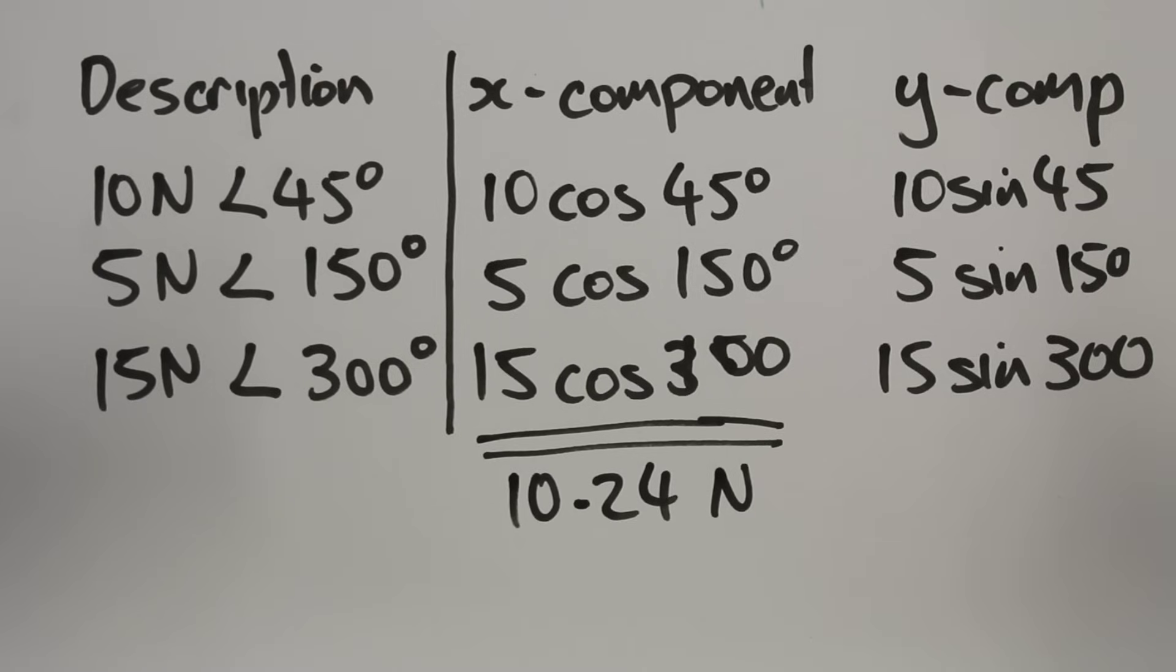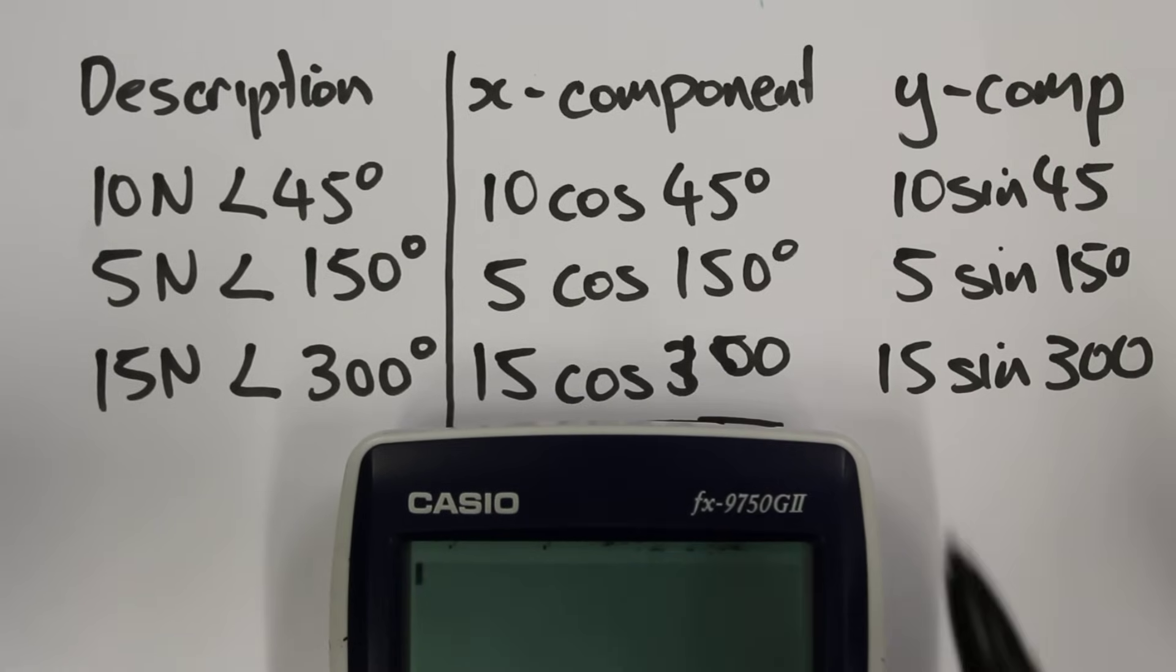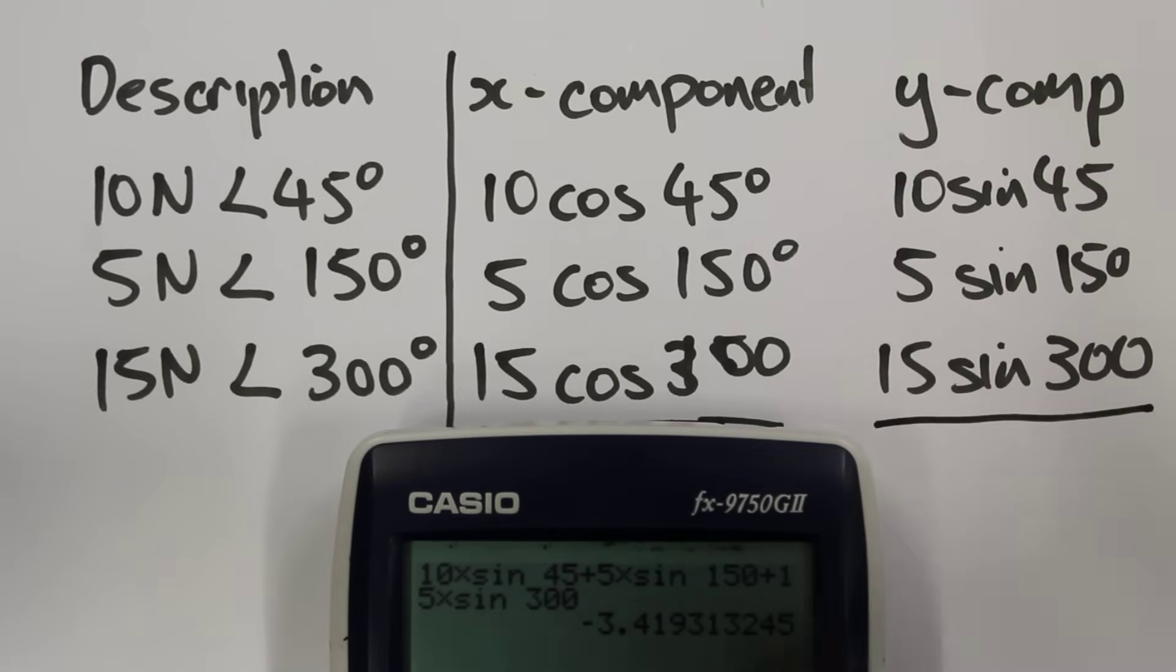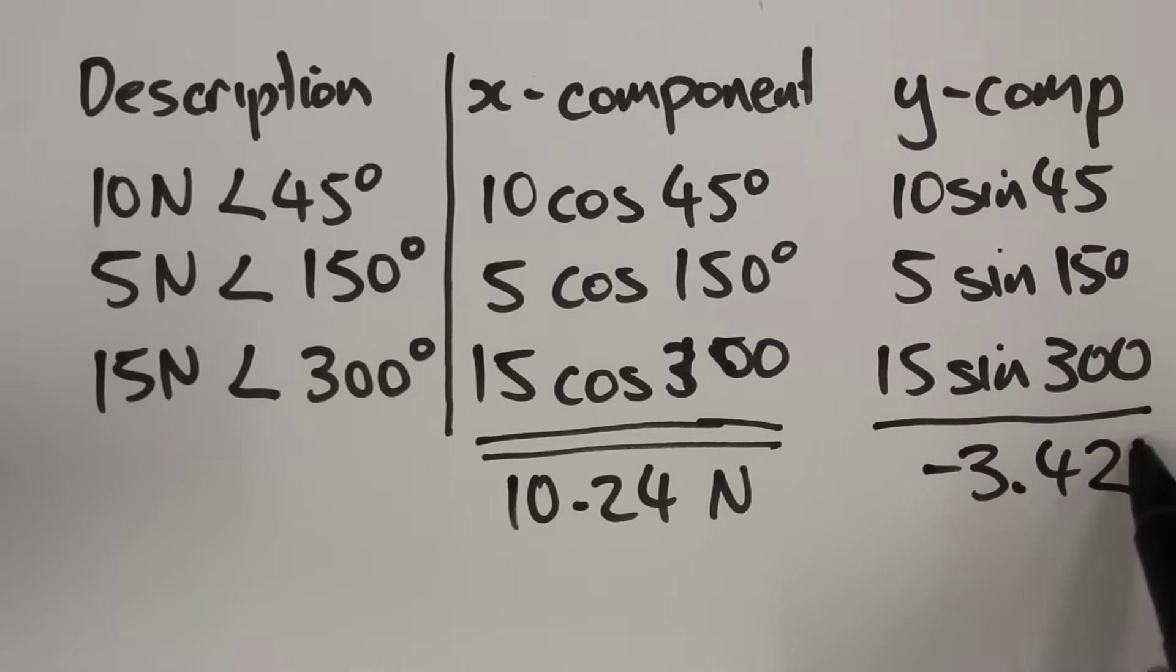Next we can do the same thing for the y-component of force. For the y-components, we have 10 times sin 45 plus 5 times sin 150 plus 15 times sin 300. Press the execute button and we get minus 3.42 rounded for our value of force. The units being newtons as well.